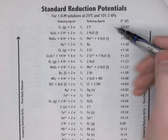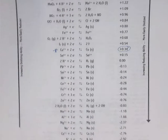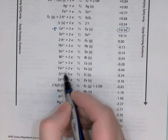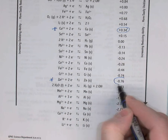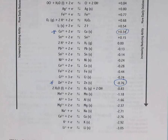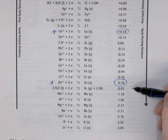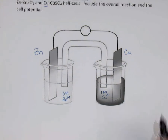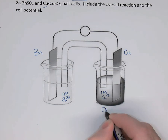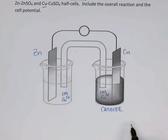The copper-Cu²⁺ reaction has a reduction potential of positive 0.34 volts. Further down on the table we can see the zinc reaction — Zn²⁺ gains electrons to make zinc, a reduction reaction, and its reduction potential is negative 0.76 volts. This tells me that copper has a higher potential for reduction than zinc, and since reduction occurs at the cathode, the copper electrode is going to be the cathode. Whichever electrode has the higher reduction potential is your cathode.